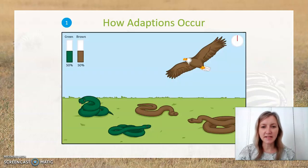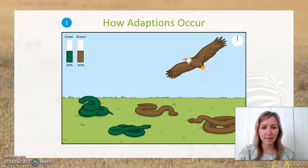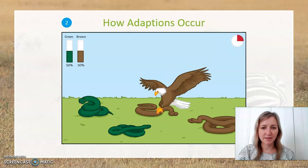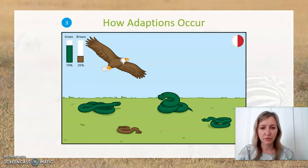What you can see on the slide now is a simple illustration of the principle of survival of the fittest. We have an eagle and we have some snakes. At this point in time, in these generations, we have 50% green snakes and 50% brown snakes. The eagle can see the brown snakes very clearly against the grass, so those are the snakes that get eaten.